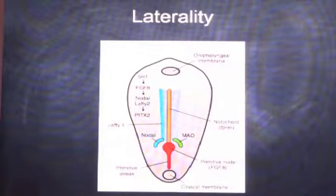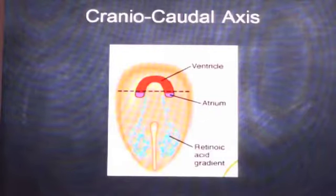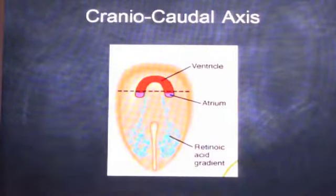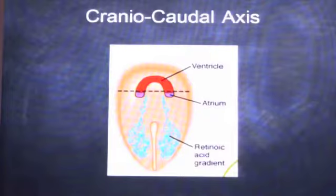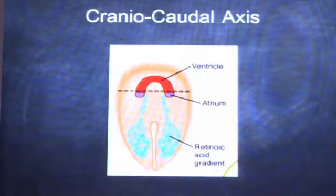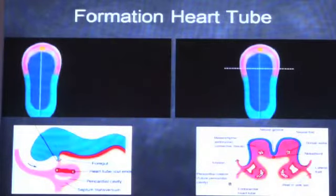Since laterality is established, we also have to determine the cranial and caudal ends of the embryo. The cranial and caudal ends are determined by retinoic acid, which is predominantly present in the caudal end, and the amount of retinoic acid determines the sinus venosus end of the heart. In pregnancy, retinoids are teratogenic to the heart at the point when retinoic acid is predominantly present in the caudal end.